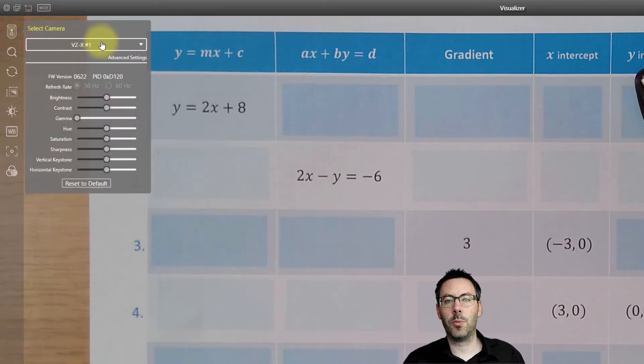Coming down the side, we've got our select camera option. I'm using the iPivo VZX camera, which is iPivo's top of the range. Because it's an iPivo camera, all the functions of the software work. With other cameras, you'll get some things that are grayed out and you can't use if they're not iPivo cameras.